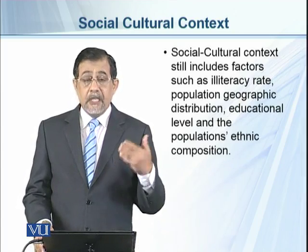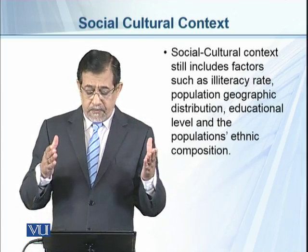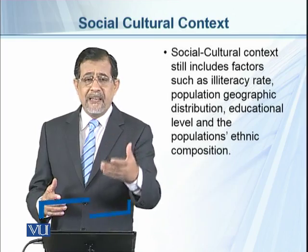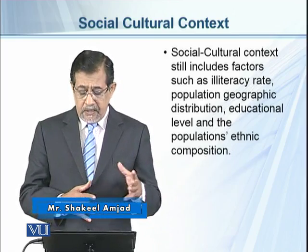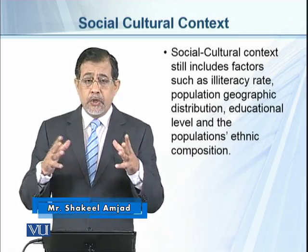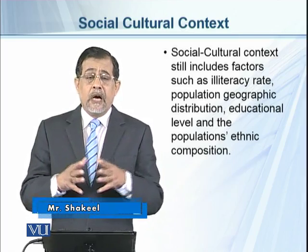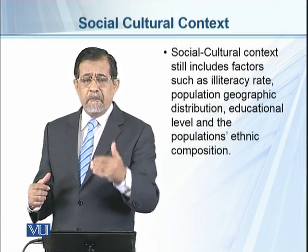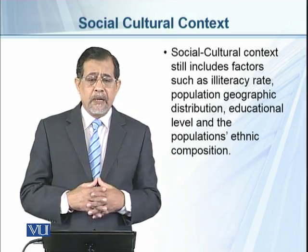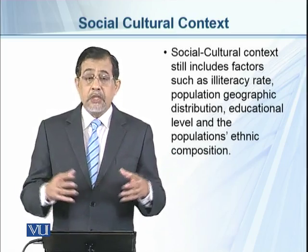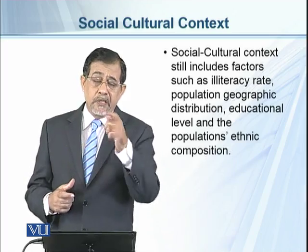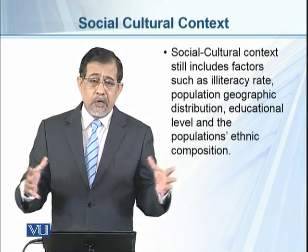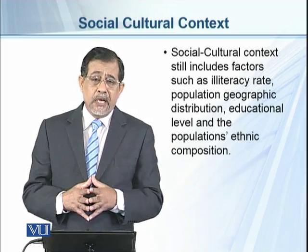This includes factors such as illiteracy rate — how many illiterate people are in that society — what the population is, geographic distribution, how they are geographically divided, how many live in plains, plateaus, or hilly and mountainous areas, educational level, how qualified they are, literacy rate, and how many universities, colleges, and schools exist.